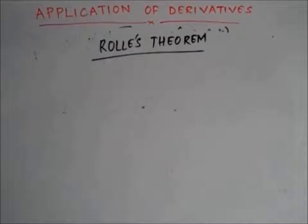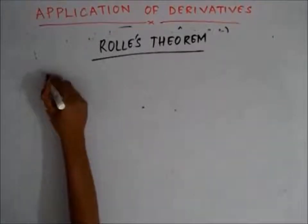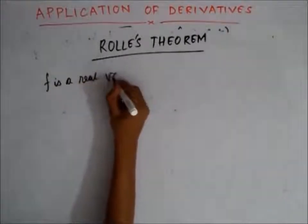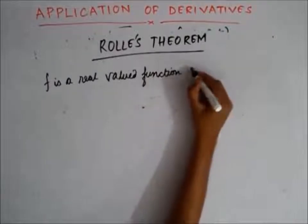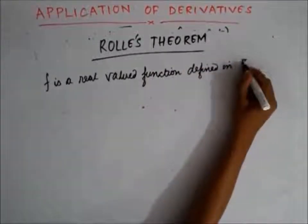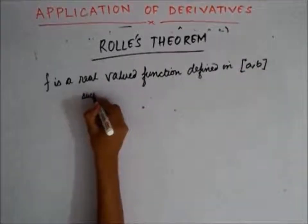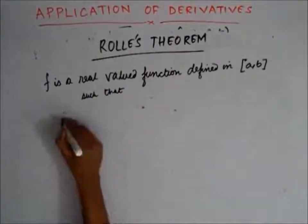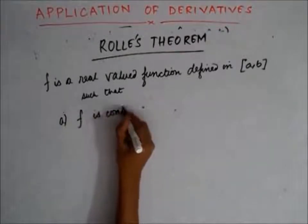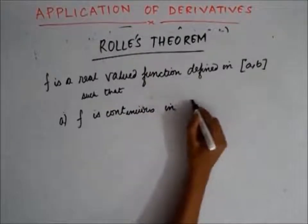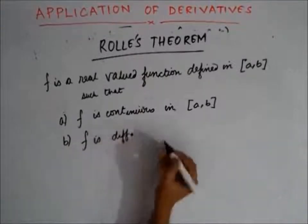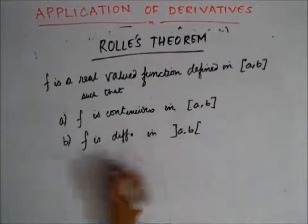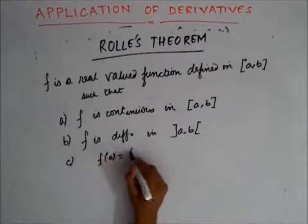This theorem was devised by a French mathematician Michael Rolle. What it states is that if f is a real valued function defined in the closed interval a to b, there are some conditions. The first condition is that f is continuous in the closed interval a to b. The second condition is that f is differentiable in the open interval a to b, and the third condition is f(a) should be equal to f(b).